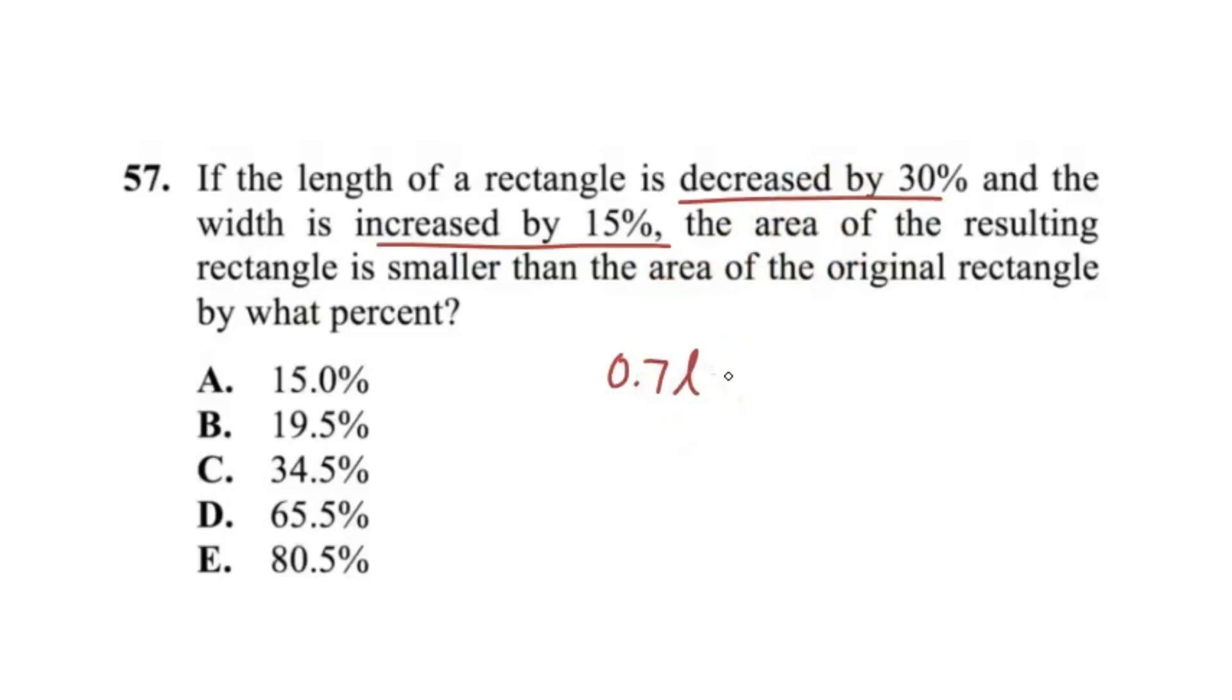I'll just call it L. And then to find the area, we're going to multiply this whole thing by the width. The width was increased by 15%, so this is just multiplied by 1.15, and that's going to be our width. And we do some math here. 0.7 times 1.15 is going to give us a value of 0.805 of our length times width, or our area.